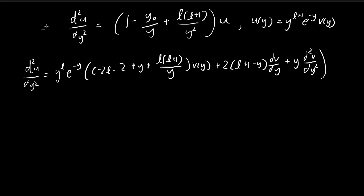Our goal is to solve this differential equation. Last time we made a guess that u(y) would take on a certain form, and then we found the second derivative of u with respect to y, and found that it is equal to this expression. Now we're ready to substitute this expression back into the differential equation. The left-hand side is equal to the second derivative, and on the right-hand side we have all this stuff over here.